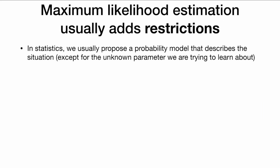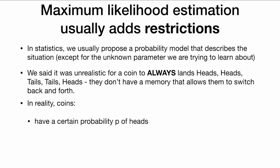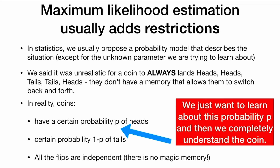But we know this is not how things work — not all people are the same height. So maximum likelihood estimation usually adds restrictions. In statistics, we usually propose a probability model or distribution that describes the situation, except for some unknown parameter we are trying to learn about. For coins, they have a certain probability of heads, which we'll call p, our parameter. They have a probability 1 minus p of landing on tails. All the coin flips are independent — no magic memory. We just want to learn about probability p, and if we do, we completely understand how the coin works.